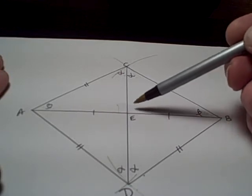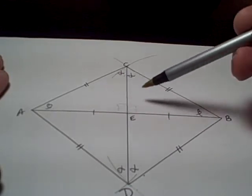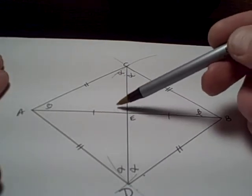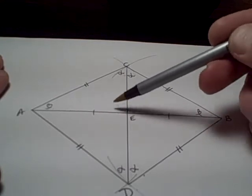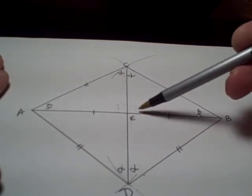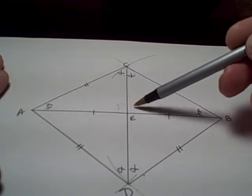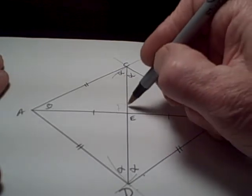Both of these angles are the same as each other by the congruence of these two triangles. And since they're equal to each other, and since together they form a straight angle, and since a straight angle is two right angles, each of these must be a right angle.